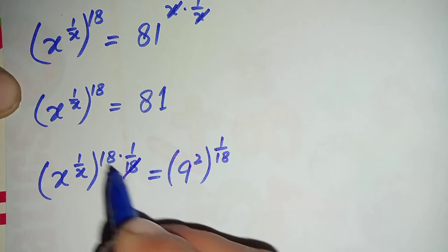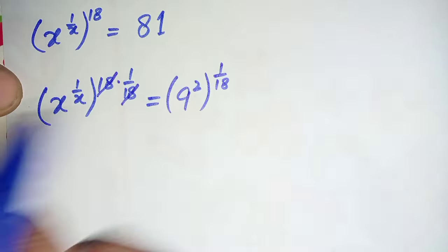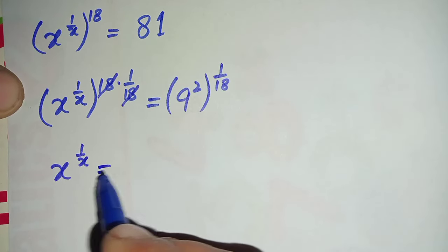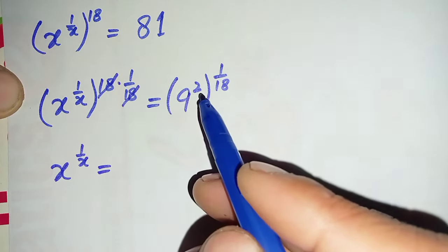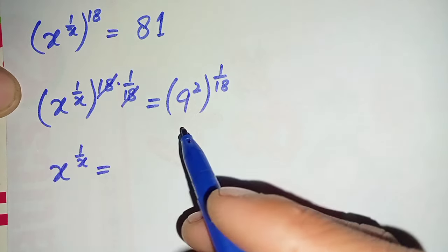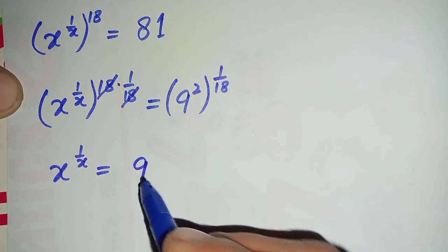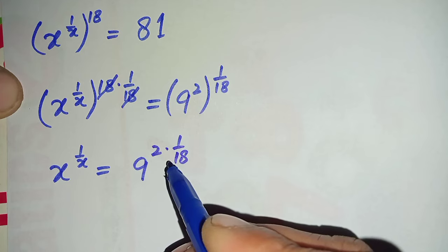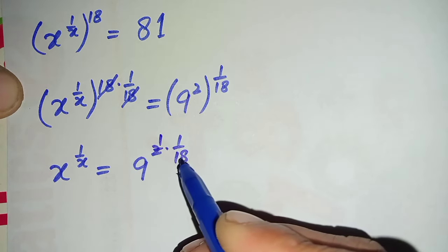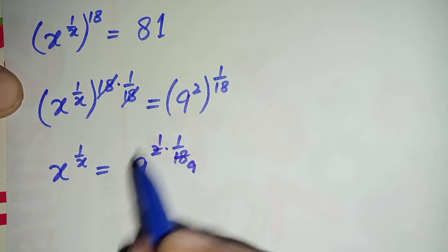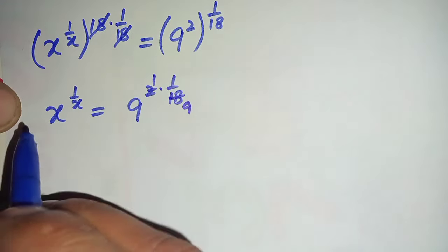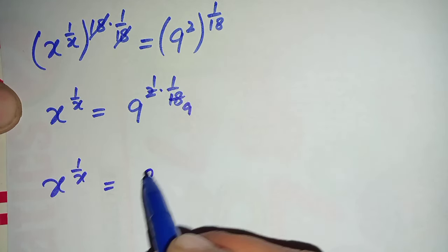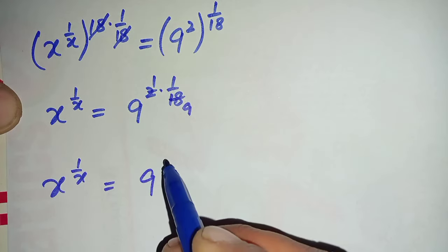Here this 18 and this 18 cancel with each other, leaving x raised to power 1 over x on the left hand side. On the right hand side, we multiply the two powers: 2 times 1 over 18 simplifies to 1 over 9. So this whole equation becomes x raised to power 1 over x is equal to 9 raised to power 1 over 9.